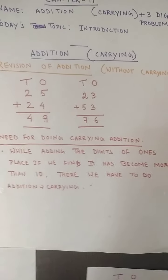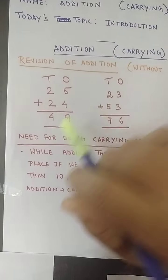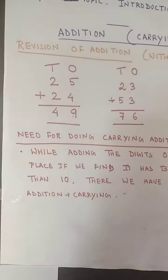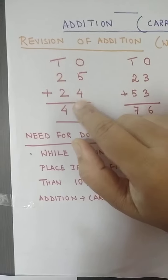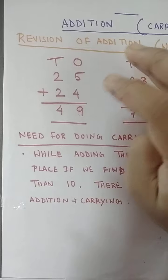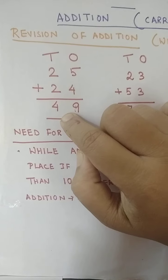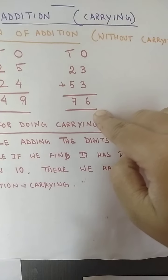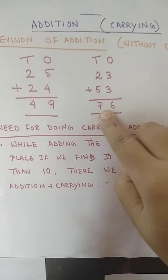Before I start with carrying addition, let us make a quick revision of addition. I hope by now you have learned how to do finger counting. Here you can see 25 plus 24 — I added 4 plus 5 and got 9. Also, 2 plus 2 is 4. Here 3 plus 3 gives 6, and 5 plus 2 gives 7. I hope you are well acquainted with this much.